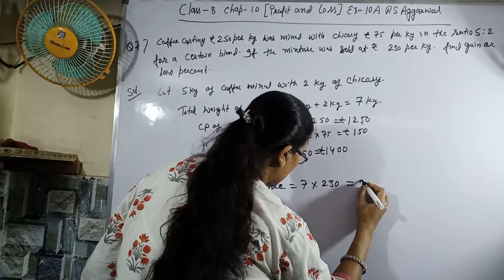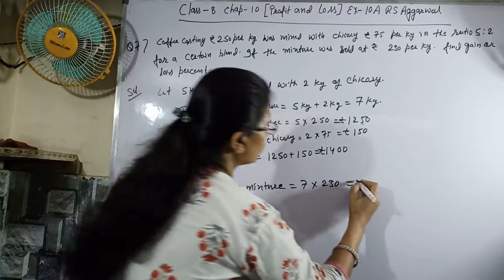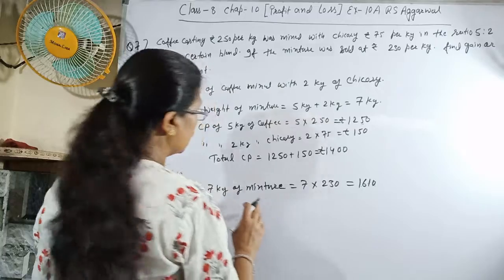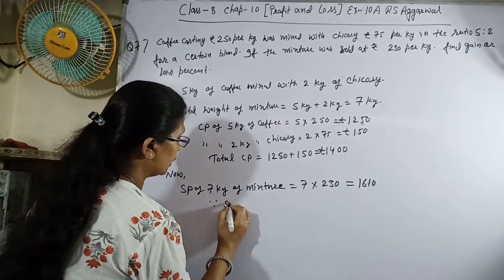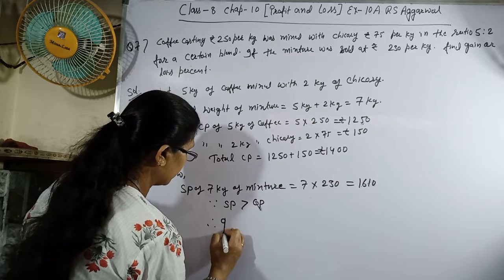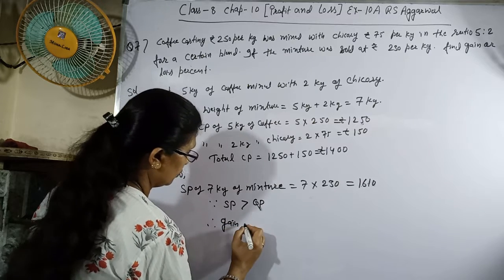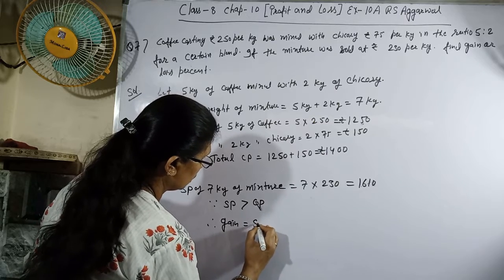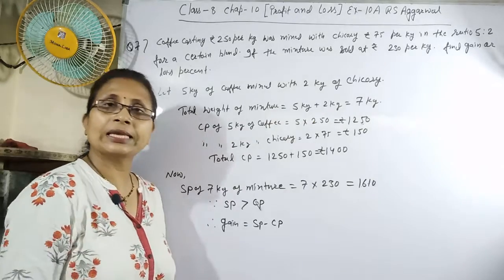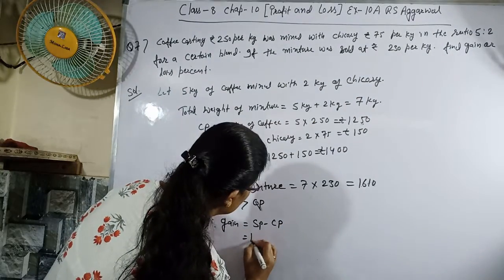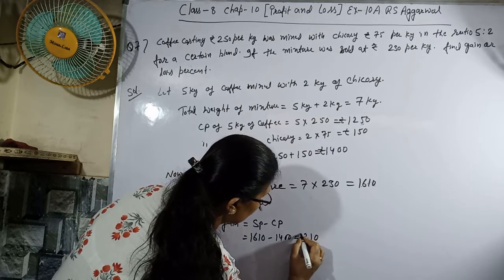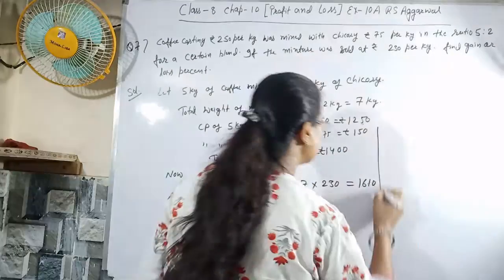equals 1610 rupees. Since SP is greater than CP, gain = SP - CP = 1610 - 1400 = 210 rupees.